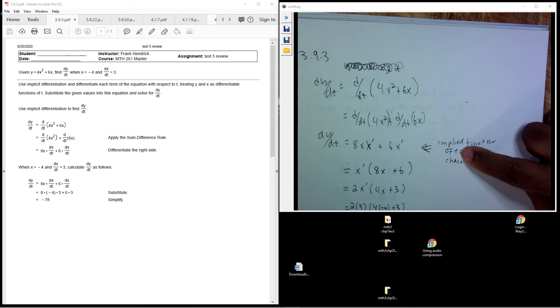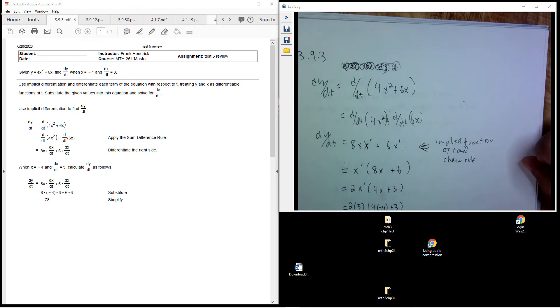So this x here is an implied function of t, and the chain rule, function inside a function.